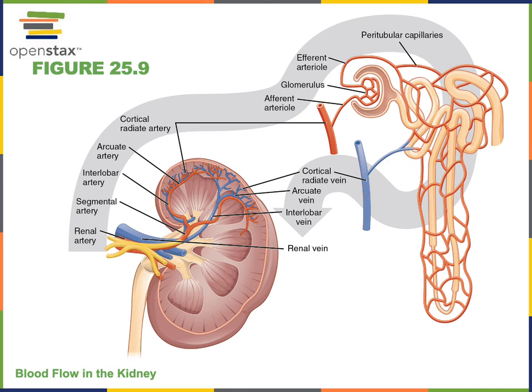Filtration is the bulk flow of fluid out of the blood, and this fluid is flowing into a system of tubes known as the nephron. The nephrons are the structural and functional units of the kidney that are responsible for producing urine, filtering the blood, and processing the blood to regulate the composition of the blood. As blood flows from the afferent arteriole into the glomerulus, some of the liquid is forced out of the blood across the glomerulus and flows into the nephron.